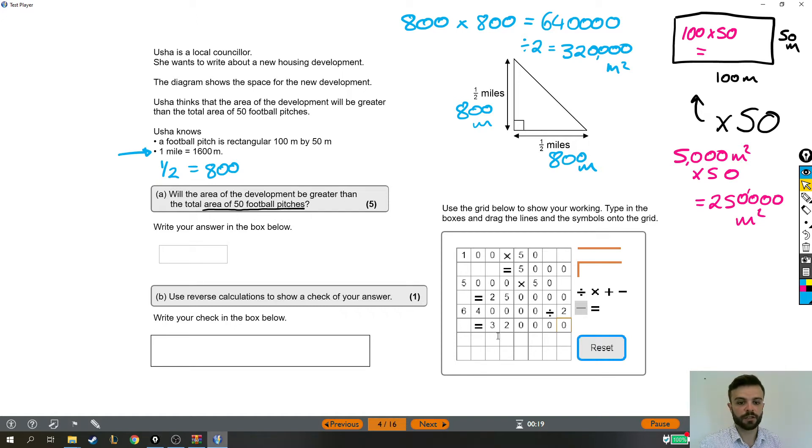That would be 640,000 divided by two and the answer to that was 320,000. So actually we've got enough information here, haven't we? We've got the area of the 50 football pitches—that's what we have here—and we've got the area of the housing development. So actually we've done all the maths we need to do, which makes me realize we actually probably did have space to put this entire calculation in.